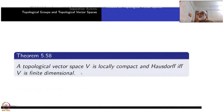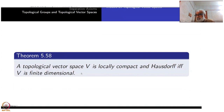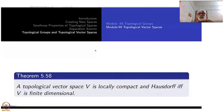So there is a compact neighborhood for the zero element. With this definition, we make the final result about topological vector spaces and finite dimensionality. We have already proved that a normed linear space is finite-dimensional if and only if the unit sphere in it is compact. In the topological vector space setting, there is no unit sphere and no concept of a metric.